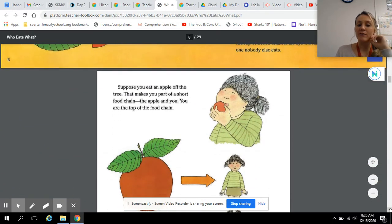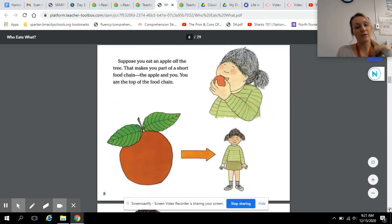Suppose you eat an apple off the tree. That makes you part of a short food chain, the apple and you. You are at the top of the food chain.